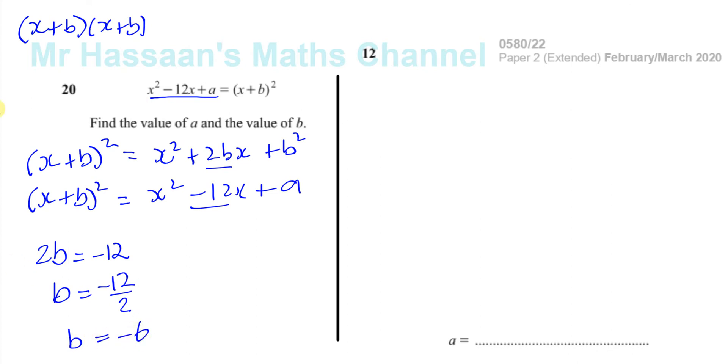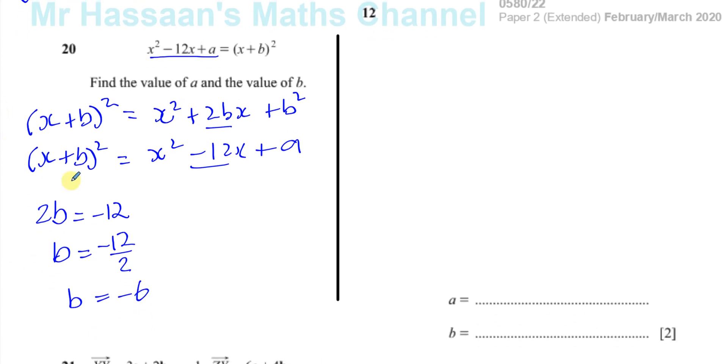So b is equal to negative 6. And if b is minus 6, now we know also that the constant term on both sides must be the same. x plus b all squared gives you x squared plus 2bx plus b squared, and x plus b squared gives you x squared minus 12x plus a.